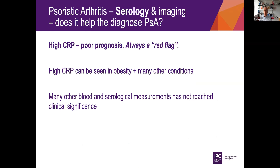If they have a high CRP, it's always a red flag. They actually have a poor prognosis, and it should be seen as a red flag where we should evaluate them for an arthritic condition if combined with joint or ligament pain. The problem is that CRP can also increase due to obesity and many other conditions, so blood samples are often not that clinically relevant for evaluating whether they have psoriatic arthritis or psoriatic enthesitis.